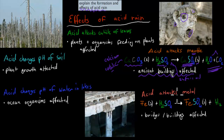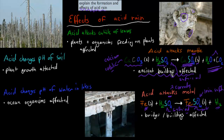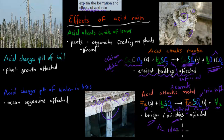Another problem is that acid corrodes metal. For example, if iron comes in contact with sulfuric acid, the iron becomes iron sulfate, FeSO4, and hydrogen gas is released. Iron itself is tough and strong, but iron sulfate is really brittle — like rust. This means iron in buildings and bridges becomes weak and brittle, so acid rain is not good for our general infrastructure.